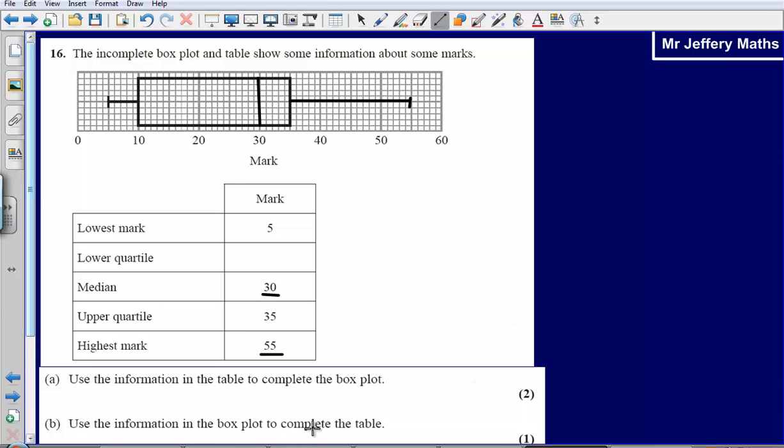Now part B says use the information in the box plot to complete the table. So let's first of all just talk about very briefly what each part of our box plot represents. So here our lowest mark is represented by that part there, where the tail comes out of the box. That point there is representing our lowest mark. The lower quartile is represented by the box beginning. So the lower quartile is where the box begins.